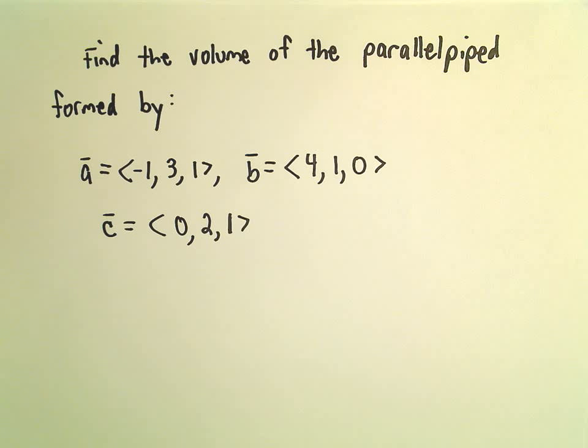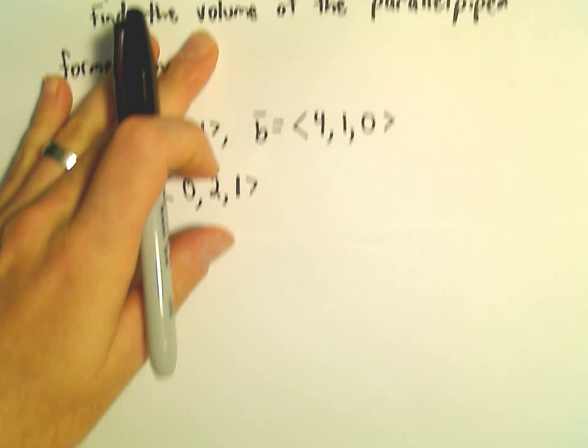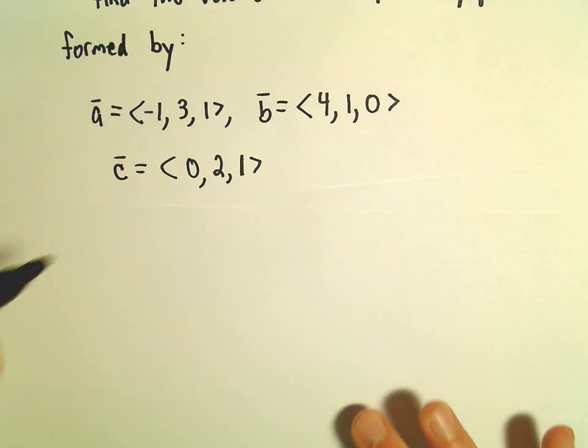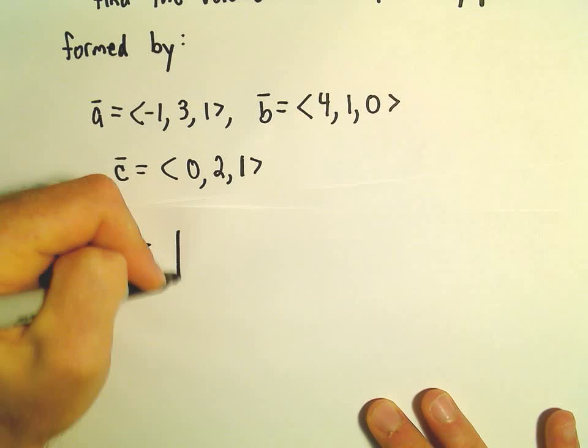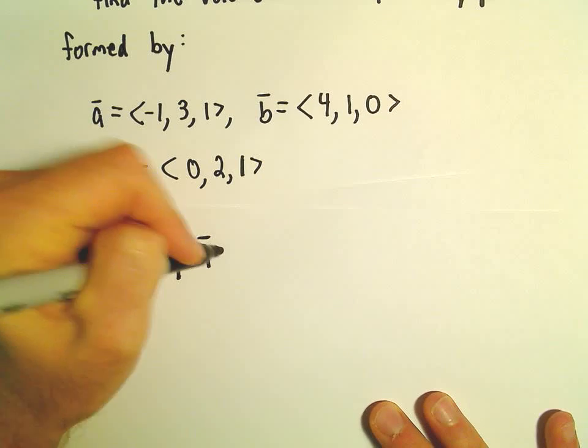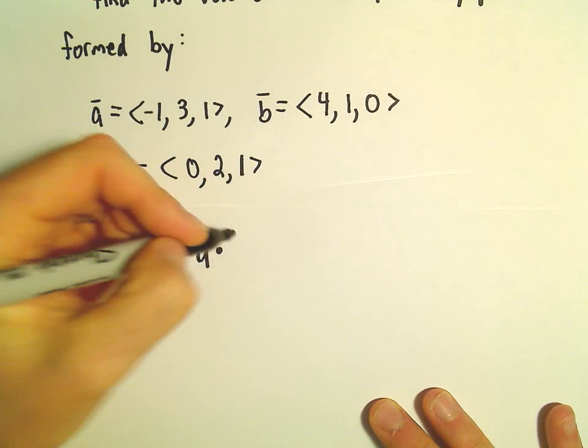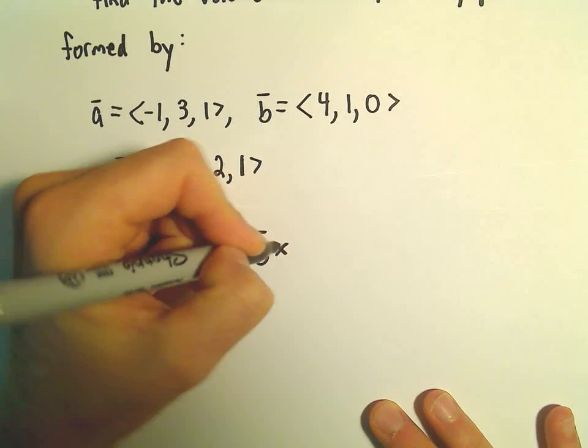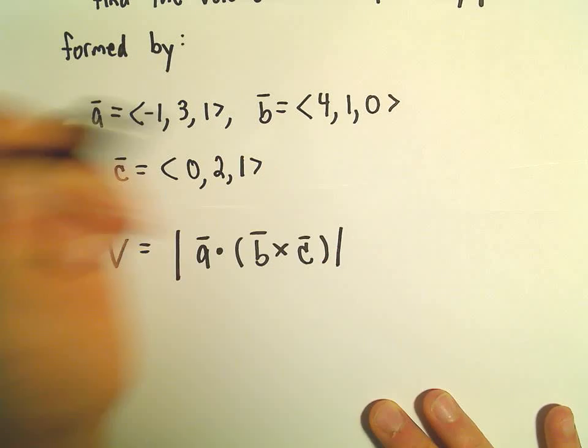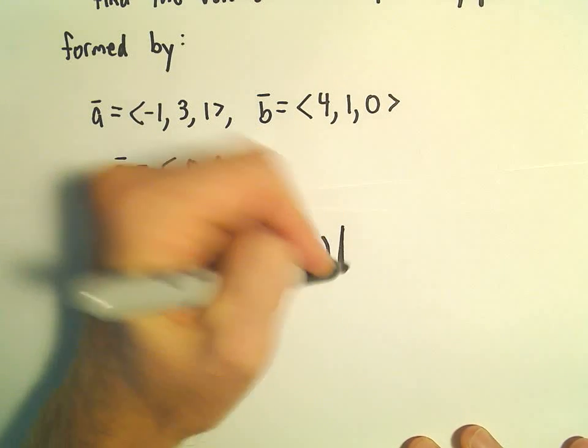To compute the volume of this parallelepiped, we're going to use the formula V = |a · (b × c)|. We'll just find the magnitude of all of this. So the first thing I'm going to do is compute b cross c.